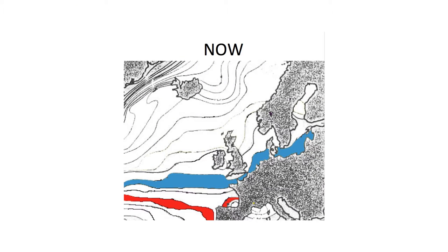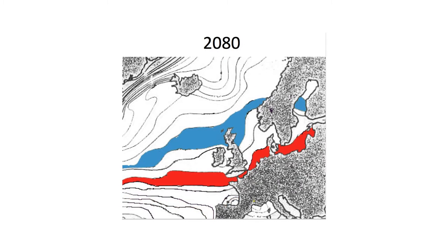Climate zones are already on the move, and it's projected that by the end of the century, mean average sea surface temperatures will have gone up by two to three degrees. The best example for that are large data sets of mobile species, for example fishes or rays, where we can show very nicely and very close to the predictions that they track their preferred climate conditions.